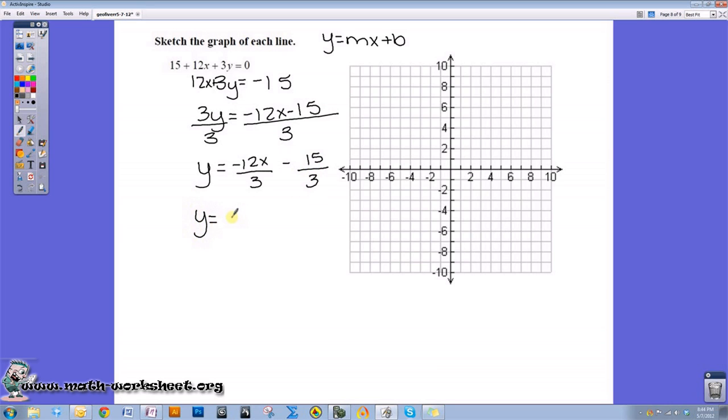So y would equal negative 4x minus 5. So my slope is the number in front of the x, the coefficient on the x, so it's negative 4, and my y-intercept is negative 5.